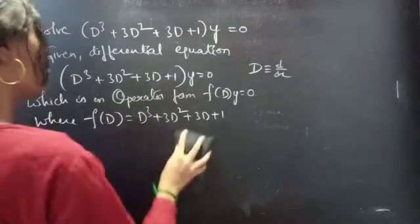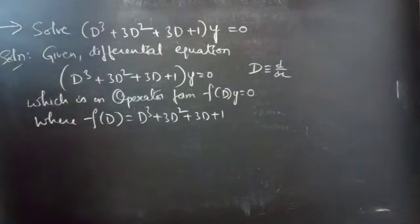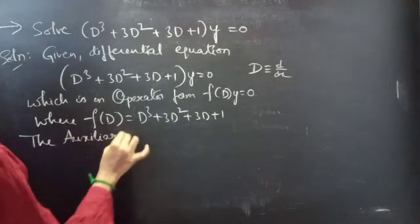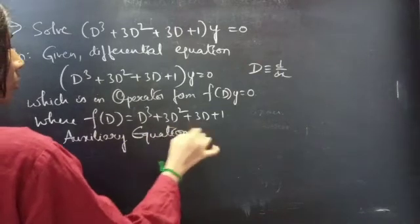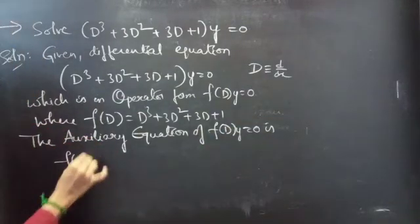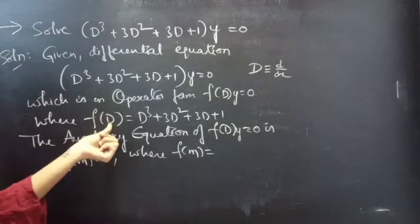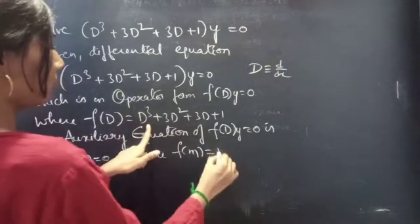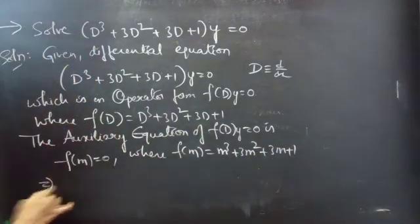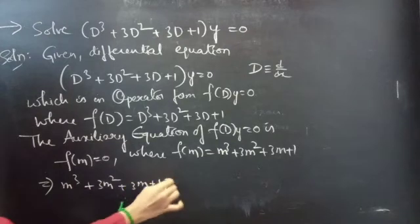Now coming to the problem. We will find the general solution using the auxiliary equation. We know that the auxiliary equation of f(D)·y = 0 is f(m) = 0, where you get f(m) by replacing the differential operator D by m. So you will get m³ + 3m² + 3m + 1 = 0.